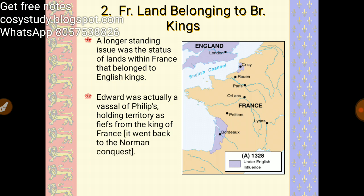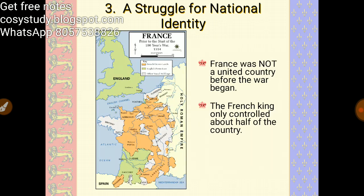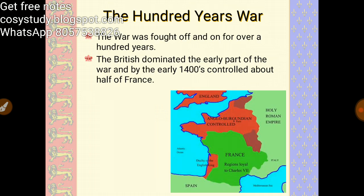A longer-standing issue was the status of lands within France that belonged to English kings. Edward was actually a vassal of Philip, holding territory as fiefs from the King of France. This went back to the Norman Conquest — a struggle for national identity. France was not a united country before the war began; the French king controlled only about half of the country.